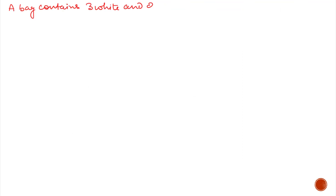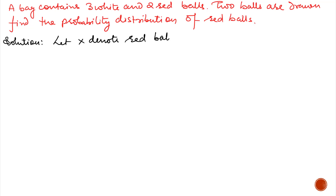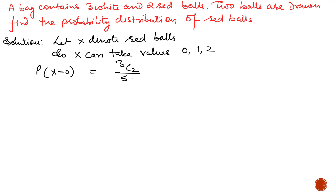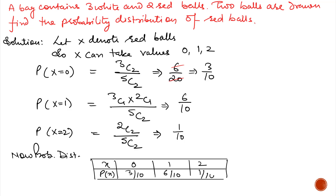Next example: when balls and cards are drawn without replacement. A bag contains 3 white and 2 red balls; 2 balls are drawn. Find the probability distribution of red balls. Since nothing is given about replacement, we assume it is without replacement. Let X denote the number of red balls, so X can take values 0, 1, and 2. Probability of 0 red (all white) is 3C2 divided by 5C2. Probability of 1 red is 3C1 multiplied by 2C1 divided by 5C2. Probability of 2 red is 2C2 divided by 5C2. After calculation, the probability distribution table gives X = 0, 1, 2 with respective probabilities 3 by 10, 6 by 10, and 1 by 10.